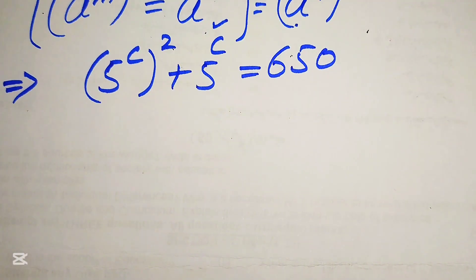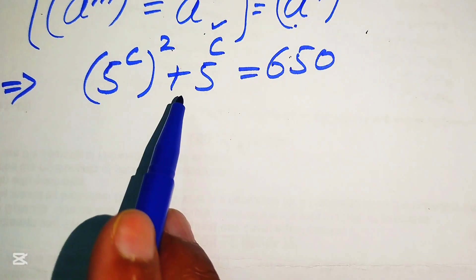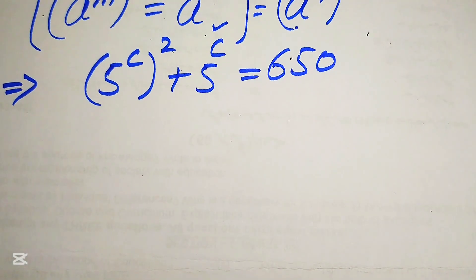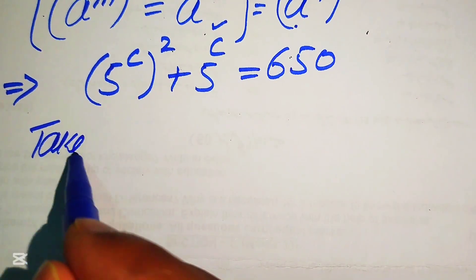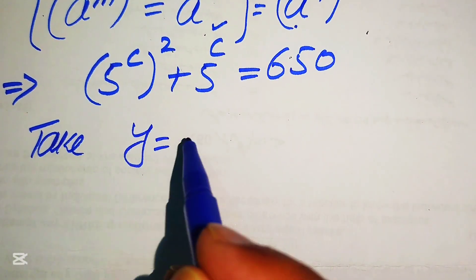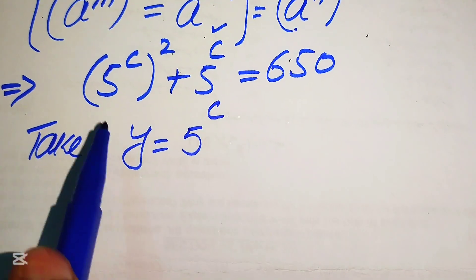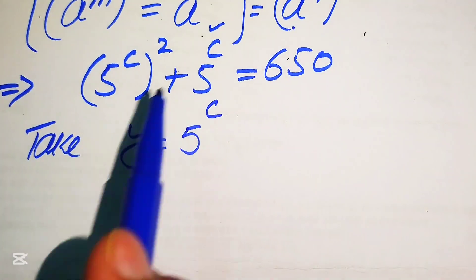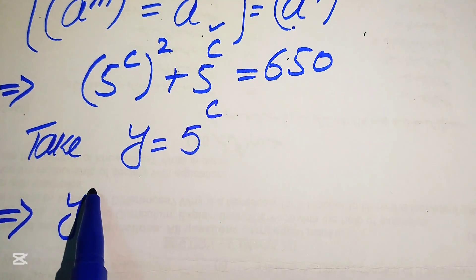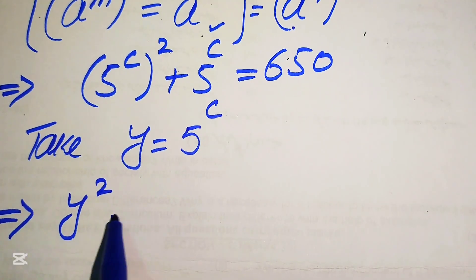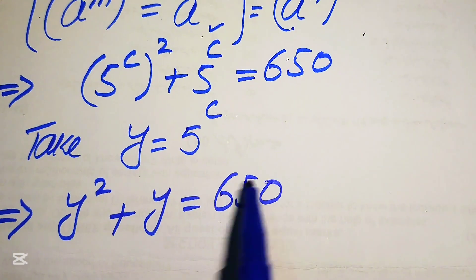Now we see the base of both terms is the same — 5 to the power of C. So we let y equal 5 to the power of C. Substituting, we get y squared plus y equals 650.